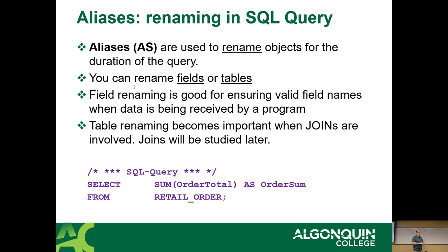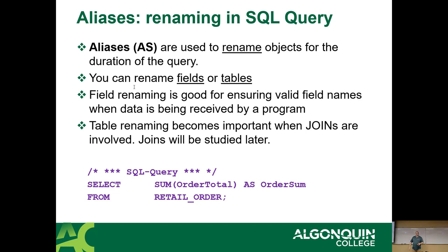Aliases allow you to rename objects temporarily — only for the duration of the query. An alias in normal English means an alternative name — a nickname. In database, we can rename columns temporarily.